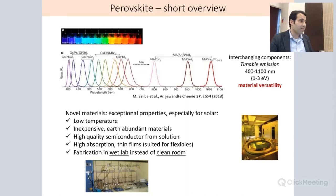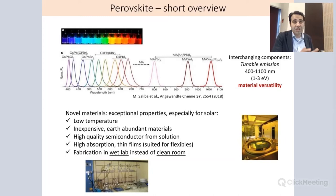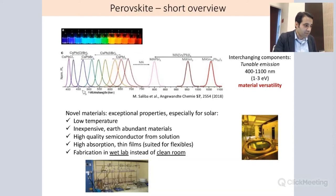Perovskites have become very interesting because, by changing the components in the three-component system — especially the halides: chlorine, bromine, or iodine — it's possible to go from 400 nanometers (cesium lead trichloride) all the way to 1050 nanometers (methylammonium tin lead iodide). So you can really tune the entire bandgap range from one to three electron-volts, which is different from other semiconductors and covers the entire visible spectrum into the infrared as well.